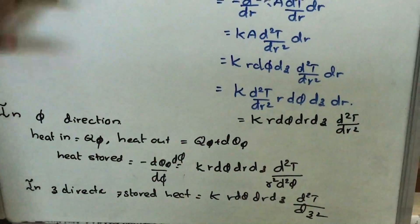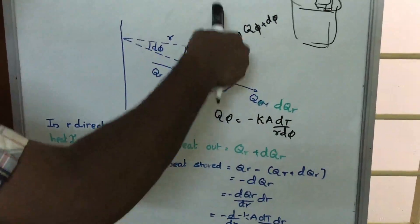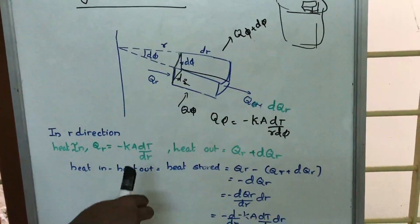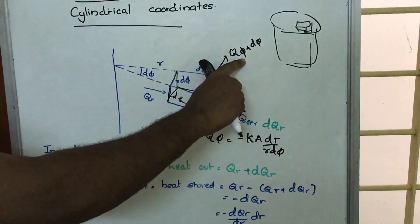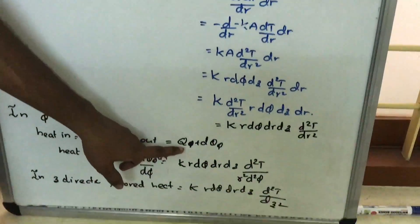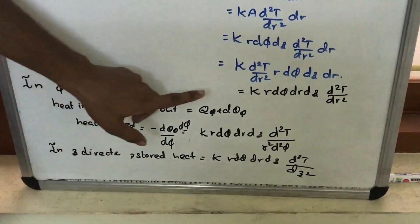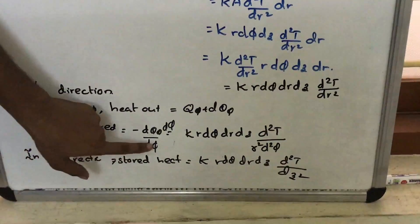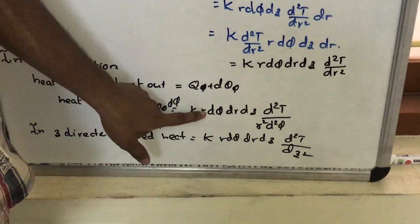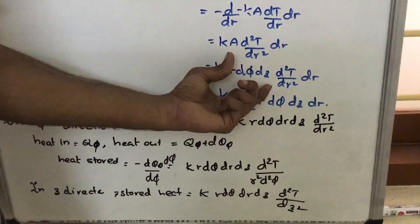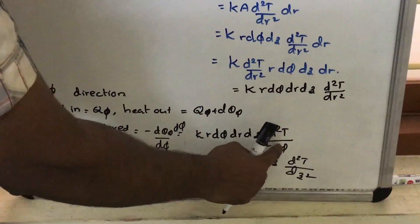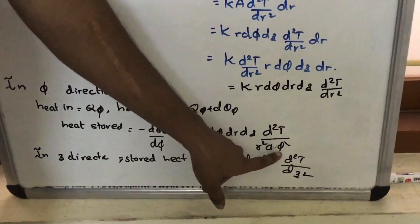Now in the phi direction — we are calling this angle phi. Heat entering is qφ, heat going out is qφ + dqφ. So heat stored equals heat in minus heat out, which is minus dqφ. Dividing and multiplying with dφ, the heat stored in the φ-direction is k·r·dφ·dr·dz·d²T/dφ².